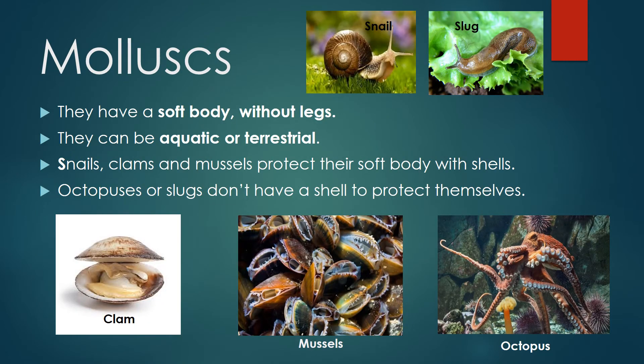Mollusks. They have a soft body without legs. They can be aquatic or terrestrial. Snails, clams, and mussels protect their soft body with shells. Octopuses and slugs don't have a shell to protect themselves.